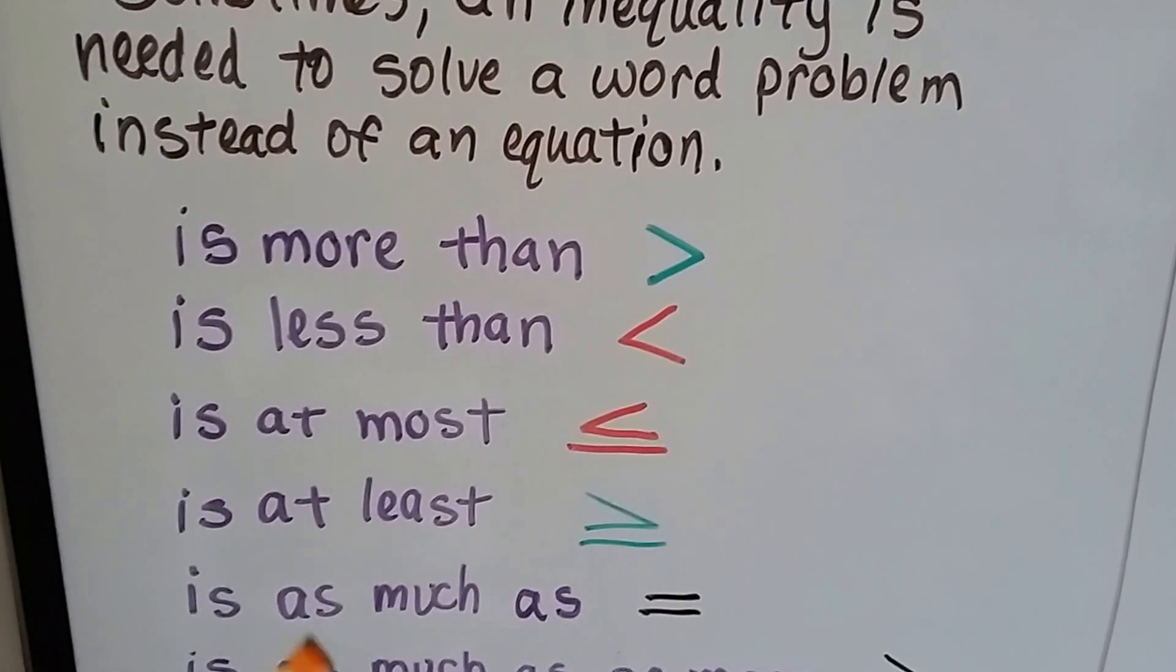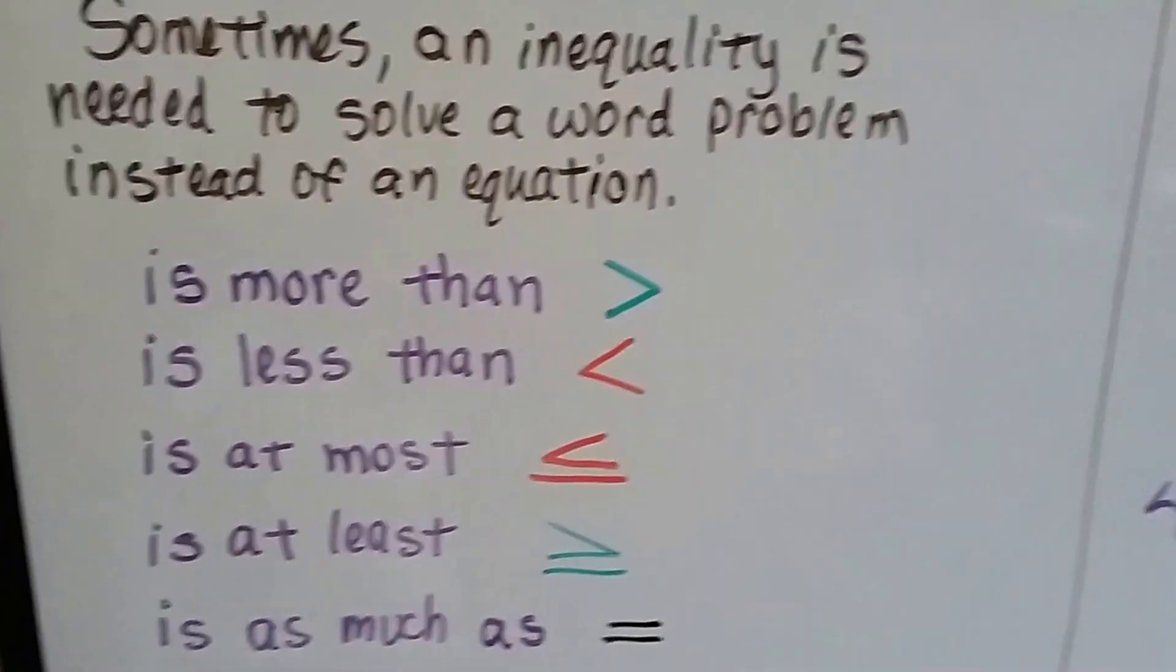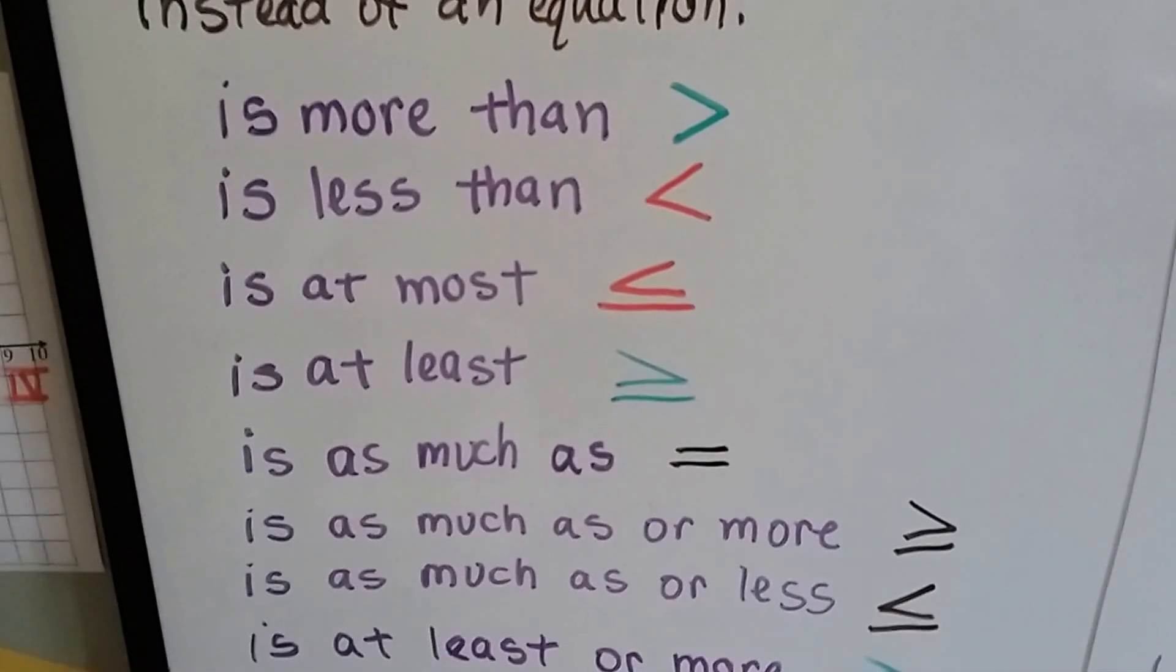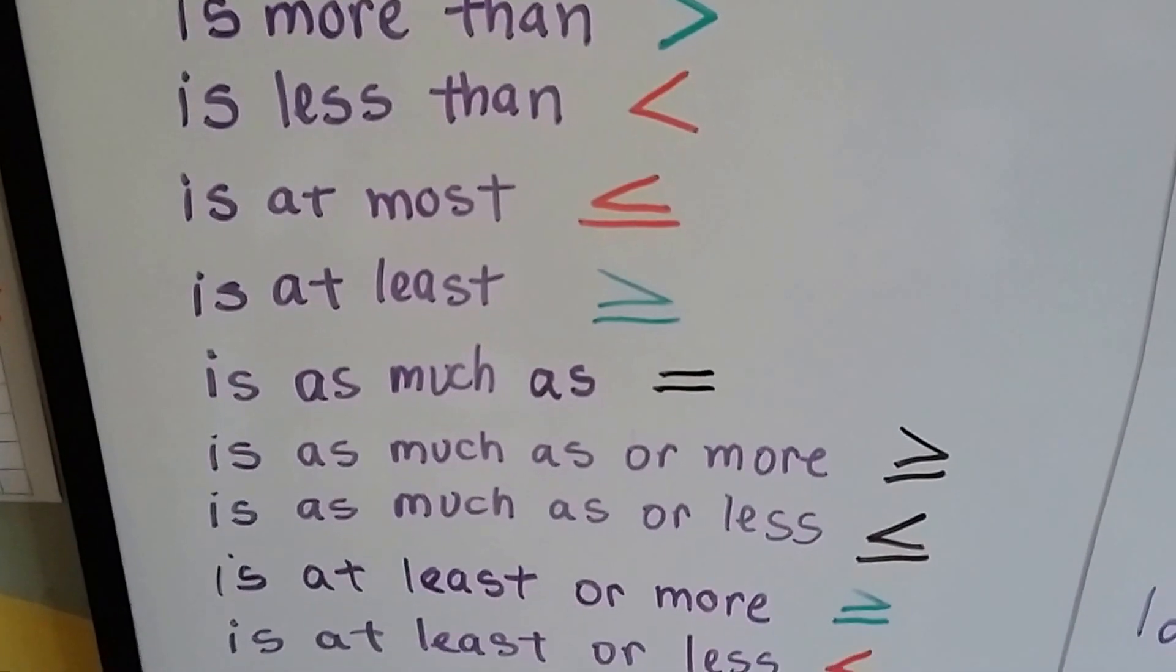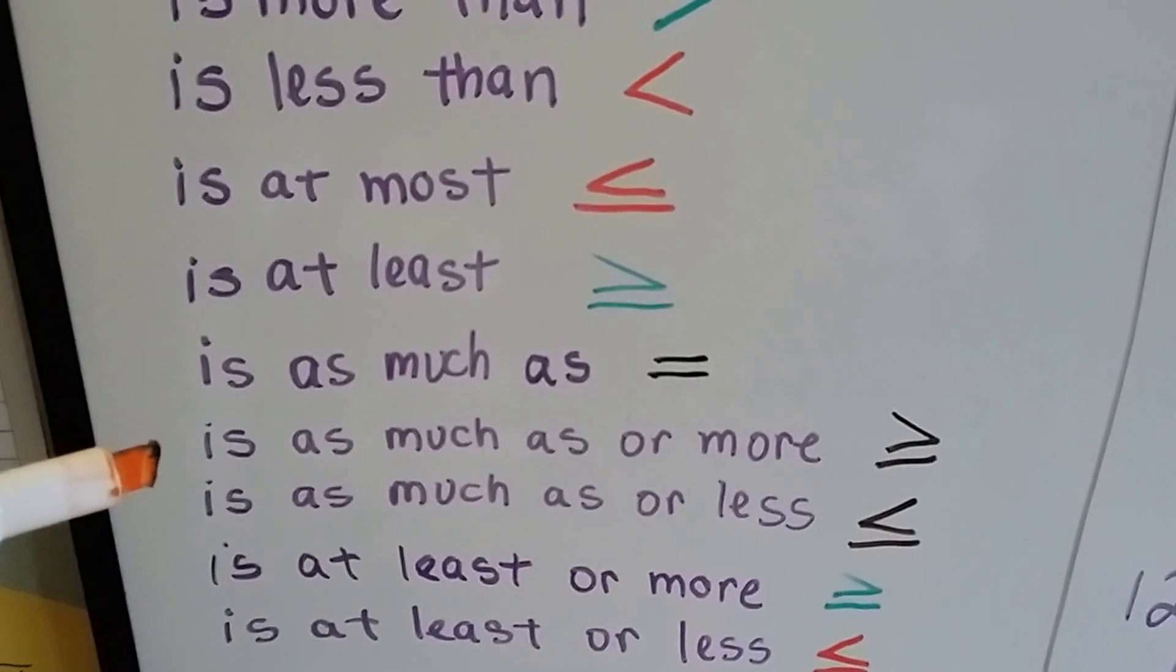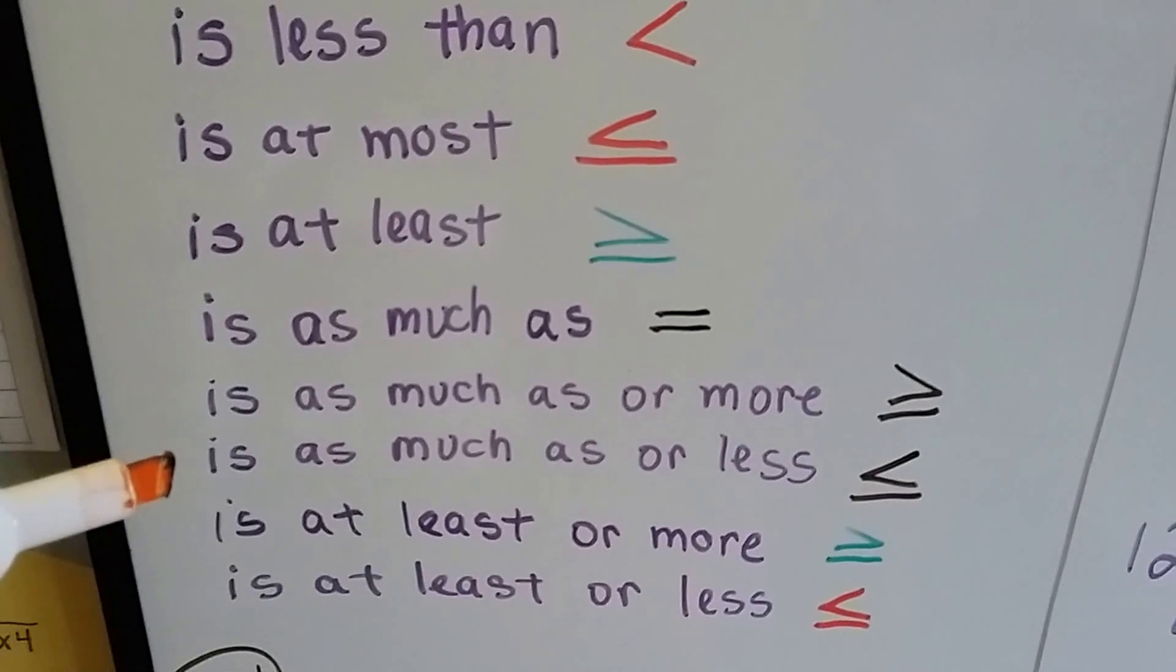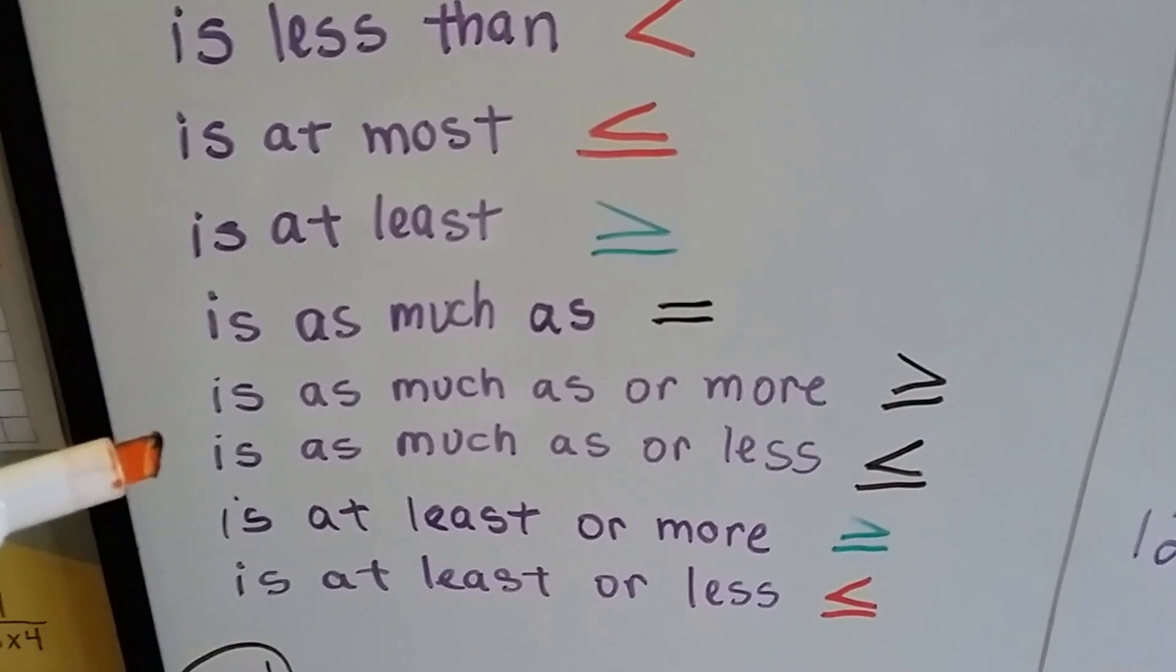Because it can't be any smaller than that. We'll discuss this with some examples right over here in a second. If it says 'is as much as,' it means it's the same as, it's equal to. If it says 'is as much as or more,' then that means it's equal to it or greater than. If it's 'as much as or less,' then it's less than or equal to.